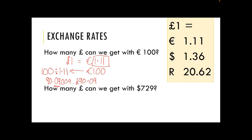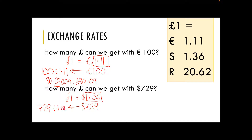For the second one: how many pounds can we get with $729? One pound equals 1.36 dollars, so my $729 is on the foreign side and we are going back, so I take the 729 and divide by the exchange rate 1.36. That gives us 536.0294, and rounding to two decimal places that is £536.03 — 536 pounds and three pence.